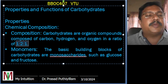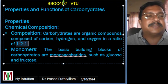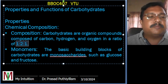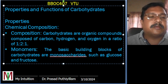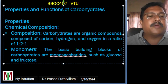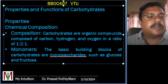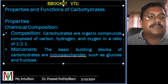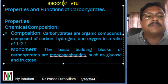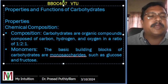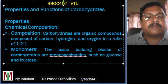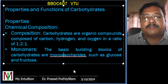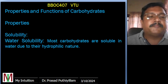Monomers are the building blocks of carbohydrates. They are constructed from smaller units called monosaccharides, which are simple sugars and the most basic form of carbohydrate. Examples include glucose, fructose, and galactose — these are monosaccharides that play a crucial role in energy production and cellular processes.